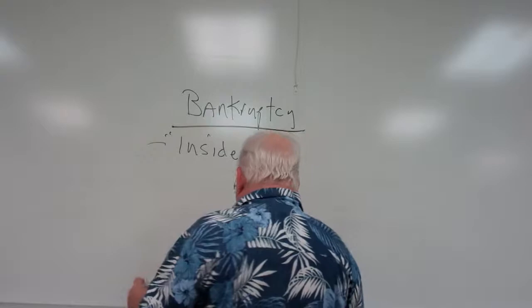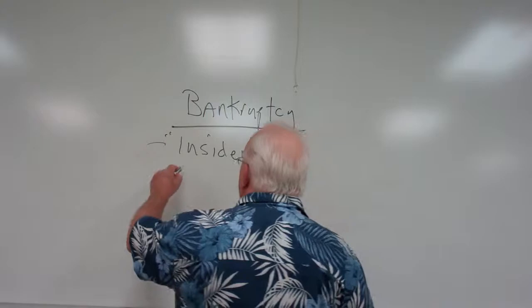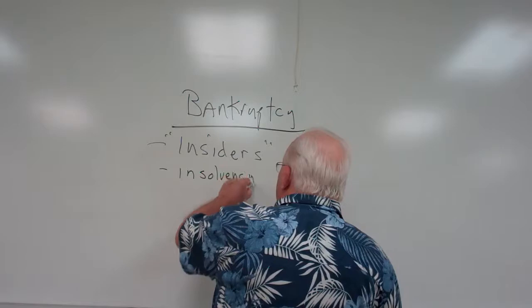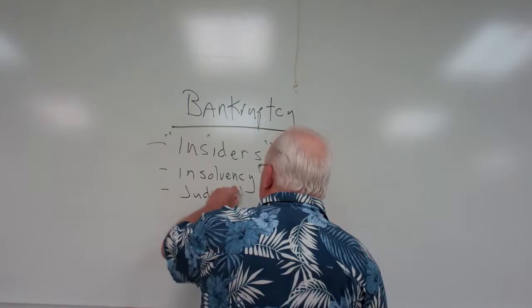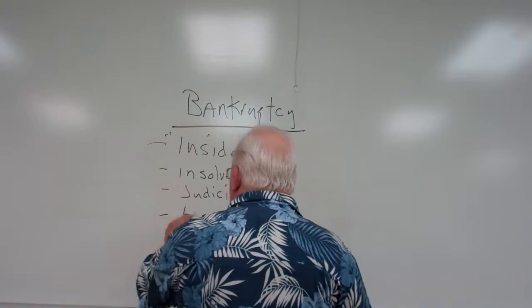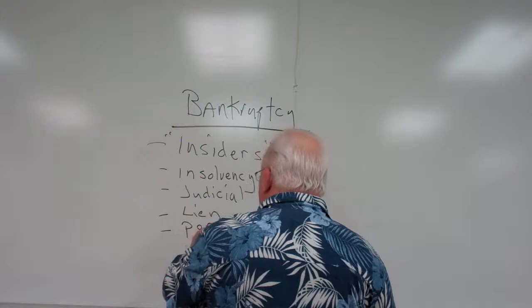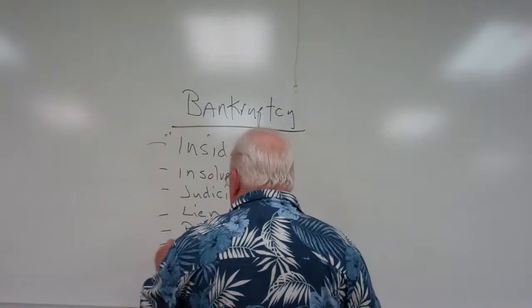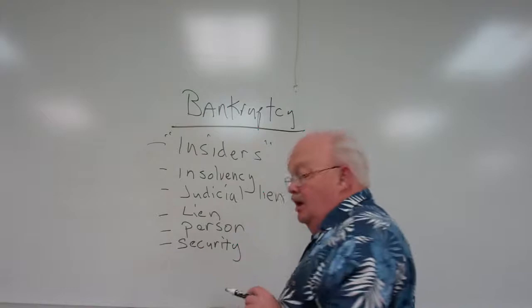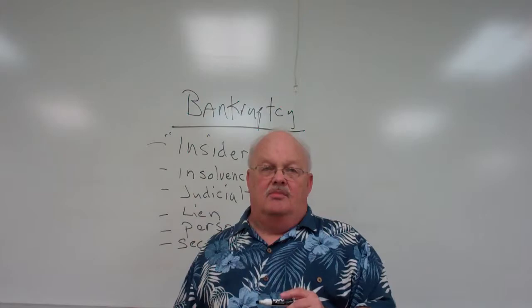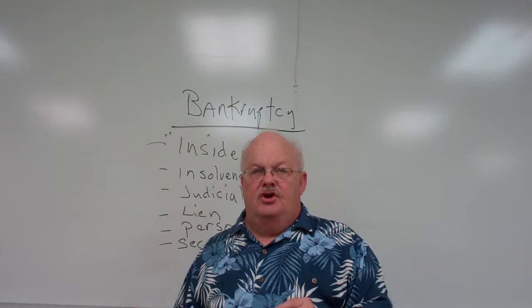Other important terms include insiders — in the stock market, somebody who knows someone working in the corporation and can get information from them. Then there's insolvency, judicial lien — which goes back to what I was saying about the term lien itself. Person can be a human or a corporation. Security — we're not talking about personal safety walking in a dark alley; we're talking about securities like stocks, a form of an investment document.